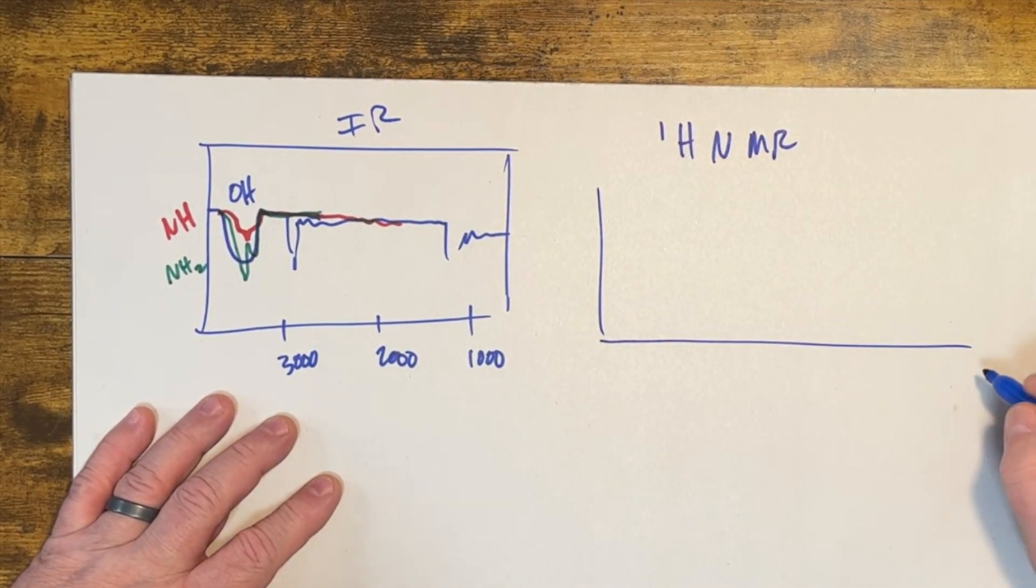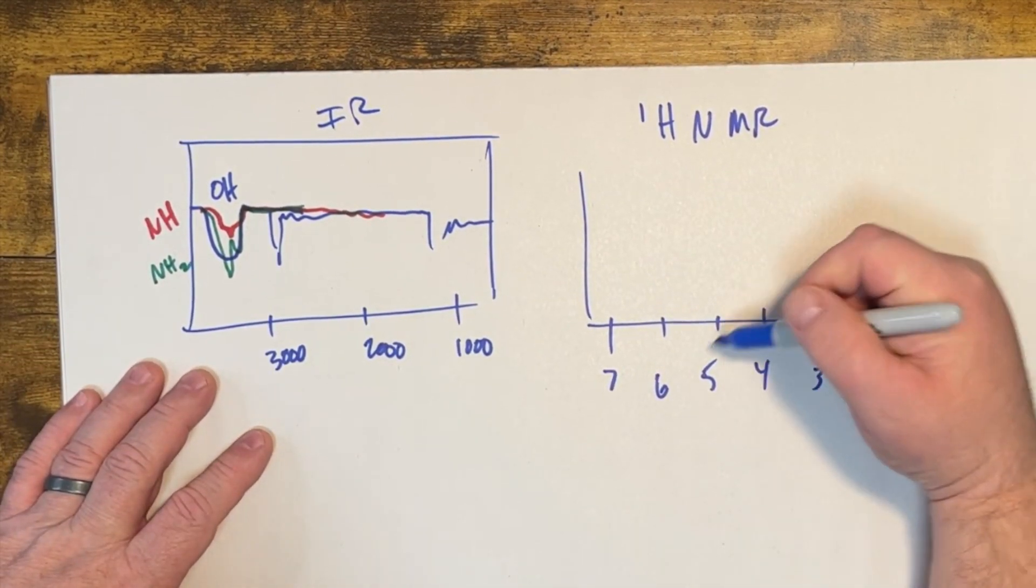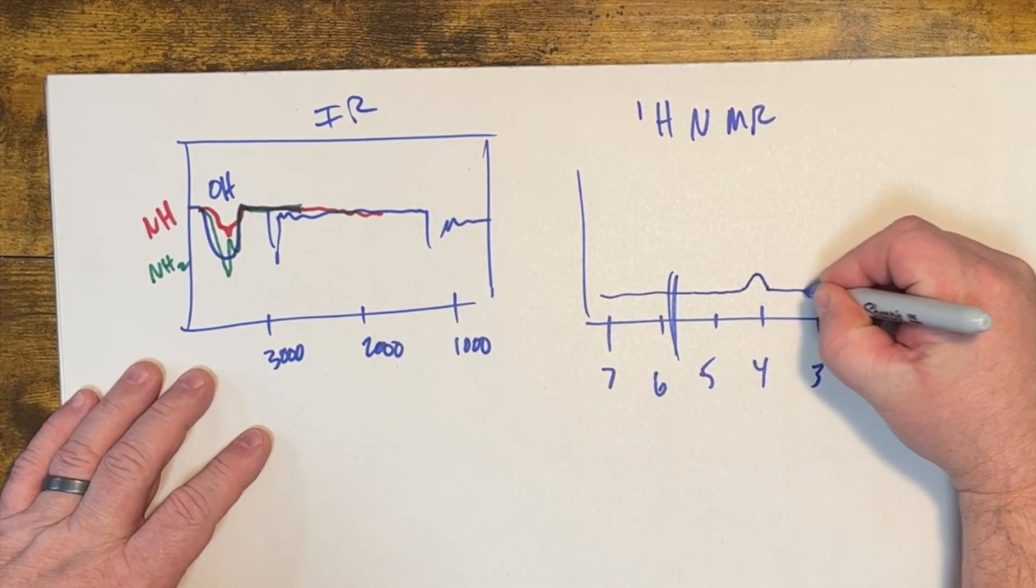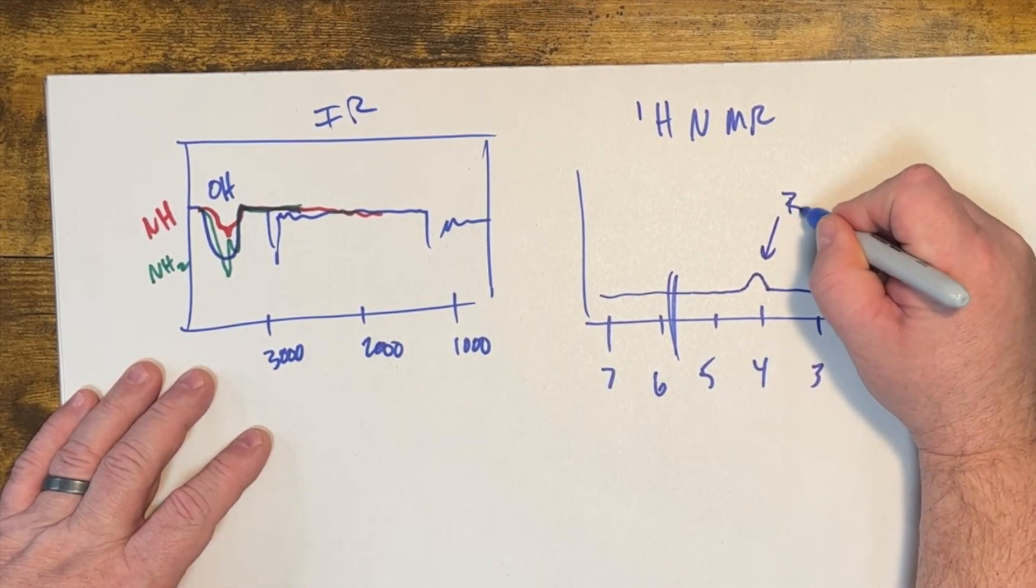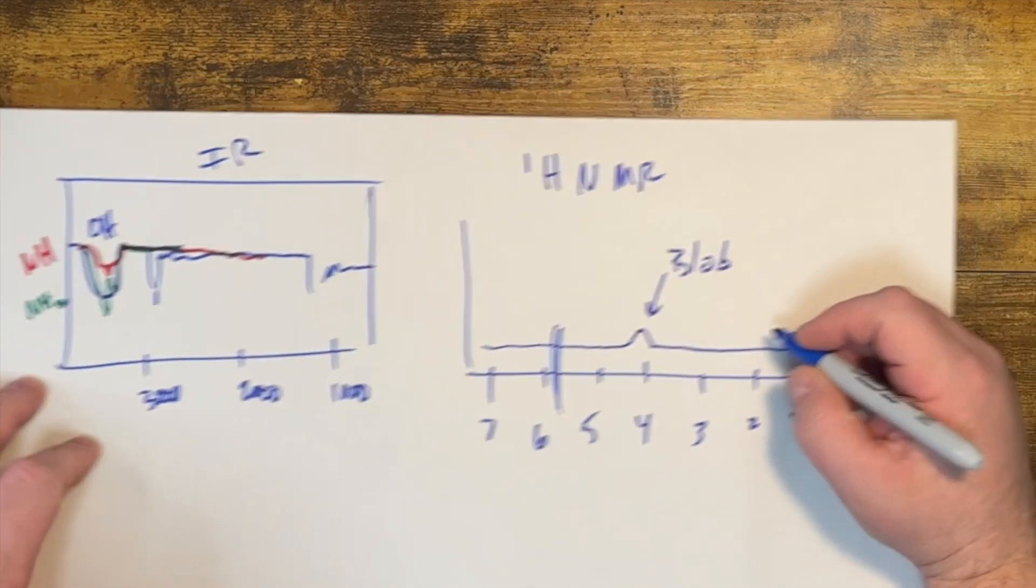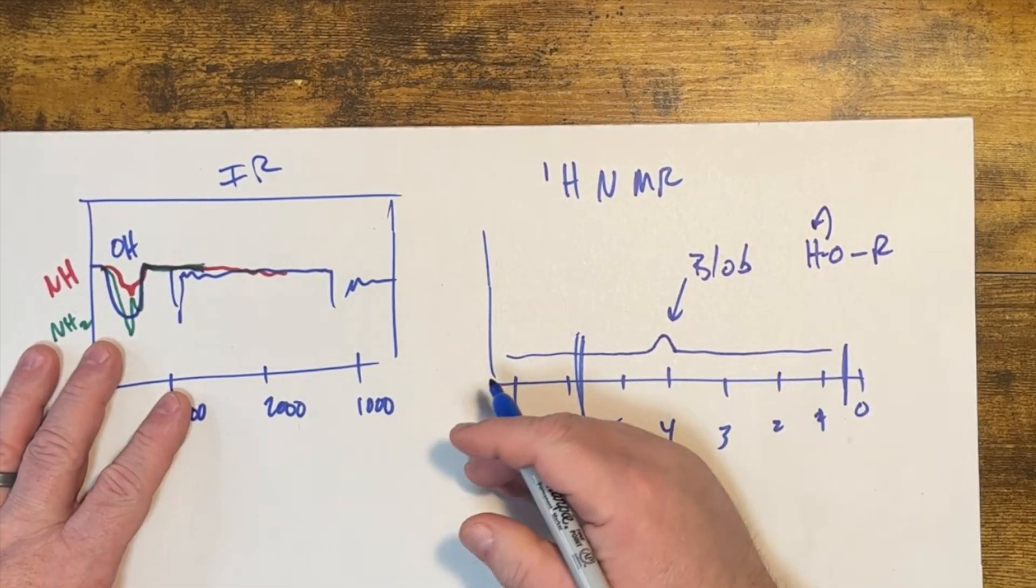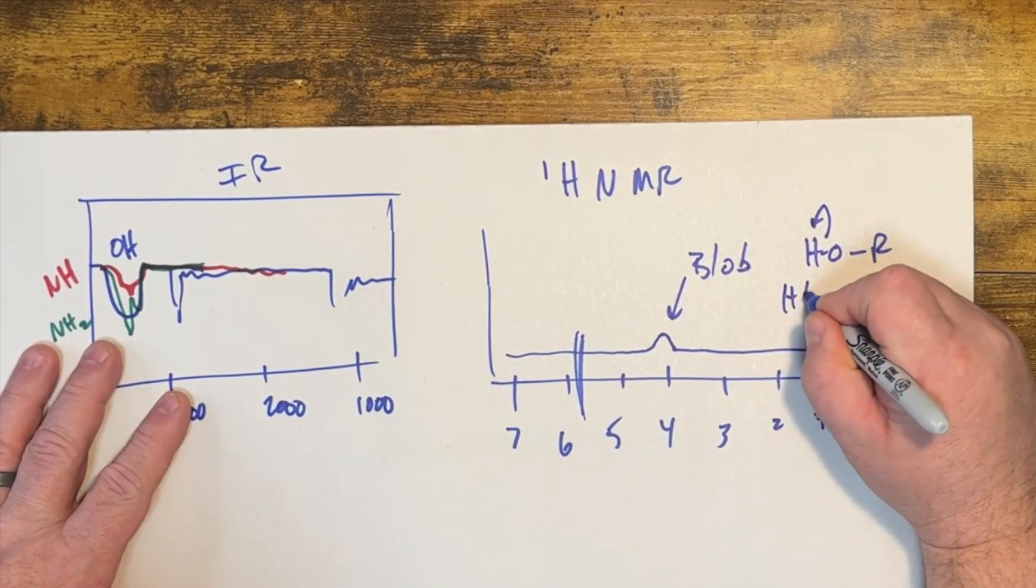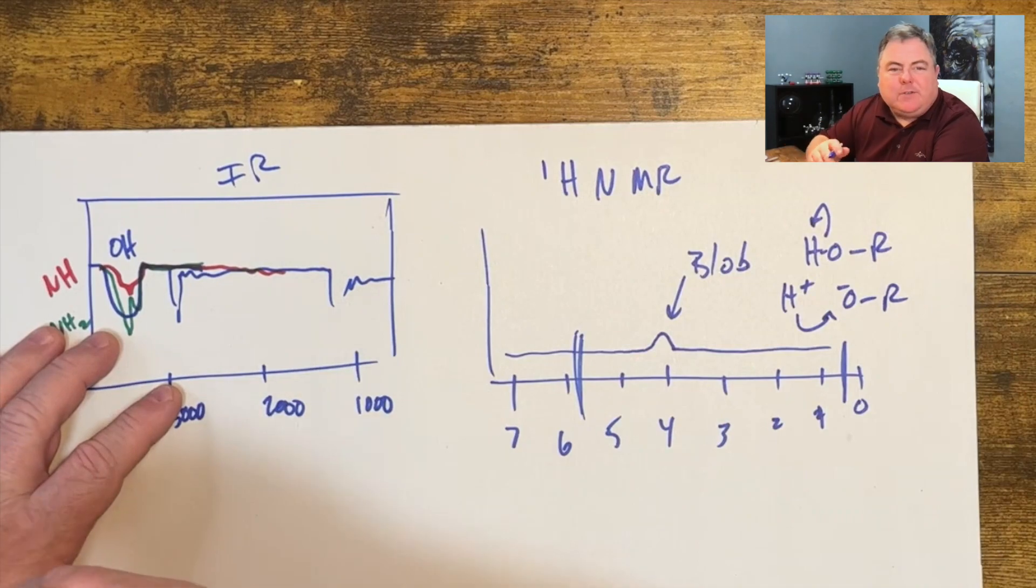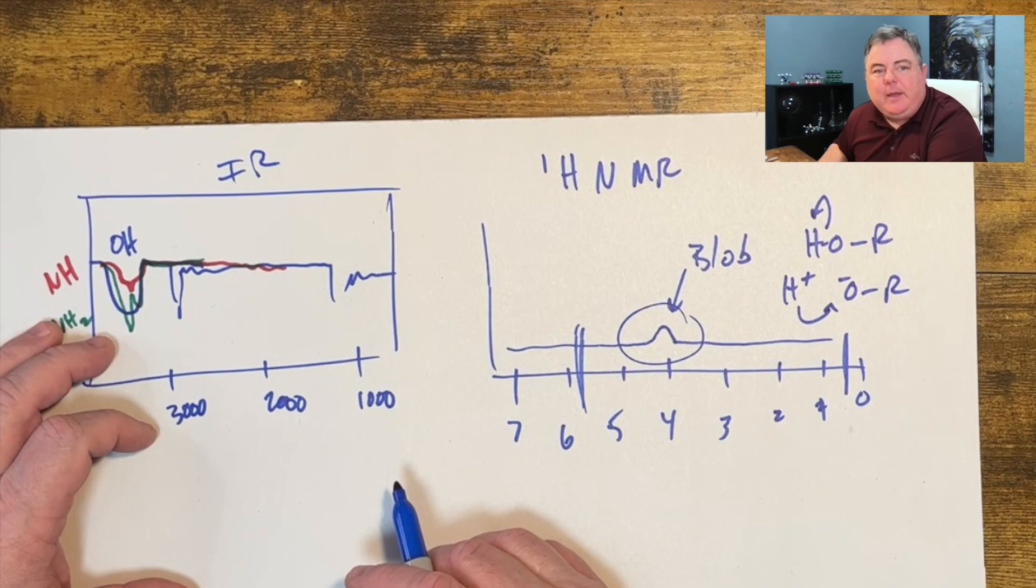Often, remember we're from zero to ten, but OH peaks or NH peaks can be anywhere from maybe a half out to maybe six. Oftentimes they look kind of like a blobby, broad looking peak. That's because if you have an alcohol, this hydrogen falls off of the molecule to make H+ and O-, and then maybe it comes back on, it reattaches. It falls off, comes on, falls off, comes on, and that ends up making it look kind of a blobby looking peak in the hydrogen NMR.